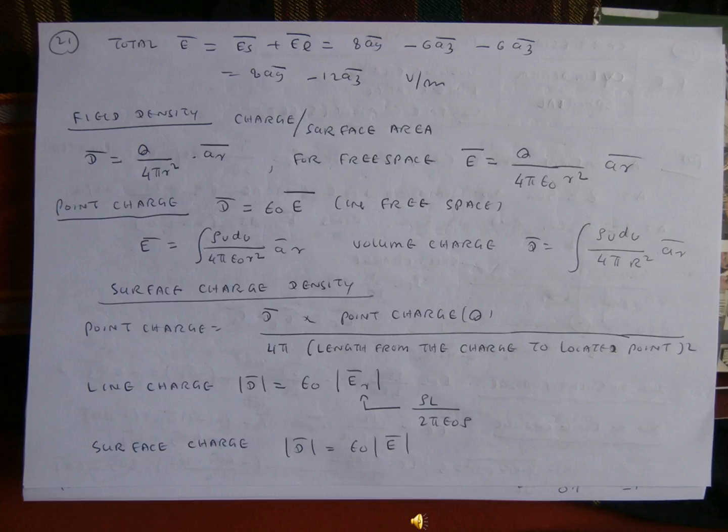So for the ar beta, E squared to ρₐ divided by 2πε₀ρ. And the surface charge is equal to D-Veta magnitude, E squared to ε₀ multiplied by E magnitude.